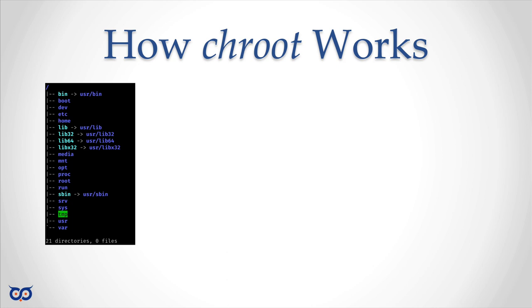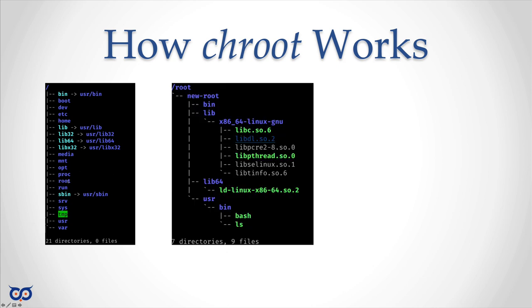Let's say this is my current root directory and its contents. Using a tree command showing the first level of directories, you can see some have arrows because directories like bin are symbolic links pointing to user/bin. So bin is actually pointing to the slash/user/slash/bin directory. Similarly sbin is a symbolic link to user/sbin. My current slash or root directory has about 21 directories.